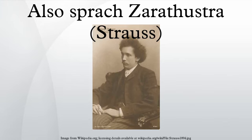Of Those in Backwaters begins with cellos, double basses and organ pedal before changing into a lyrical passage for the entire section. The next two sections, Of the Great Yearning and Of Joys and Passions, both introduce motifs that are more chromatic in nature. Of Science features an unusual fugue beginning in the double basses and cellos, which consists of all twelve notes of the chromatic scale.